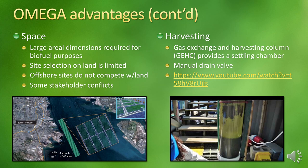Another advantage is in the harvesting stage, a current challenge in downstream processing. The photobioreactors are connected to a gas exchange and harvesting column, which supplies wastewater and dissolved oxygen by bubbling it into the water at a recirculation point. The shape and positioning of the gas exchange and harvesting column provides a settling chamber for algae that fall out of suspension on the return trip to the PBR. The microalgae are harvested through a manual drain valve at the bottom of the settling chamber, after which the column is replenished with wastewater and returns to circulation. A 6-minute YouTube video demonstrates Omega's operational procedures at their test site at the California Fish and Wildlife Laboratory in Santa Cruz.